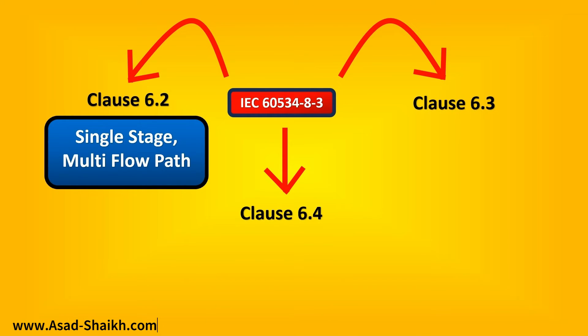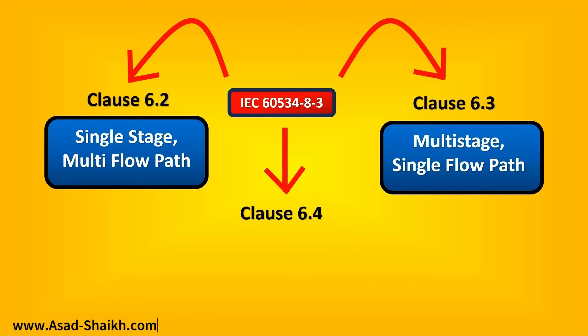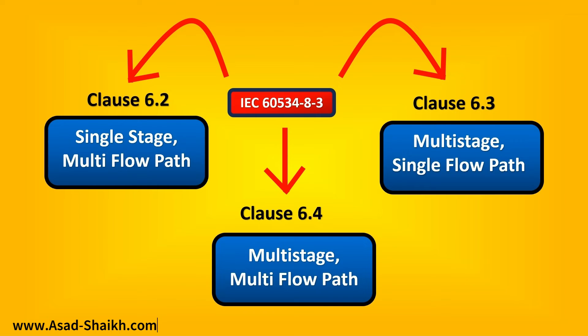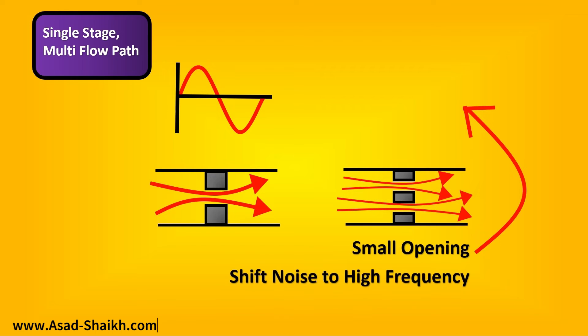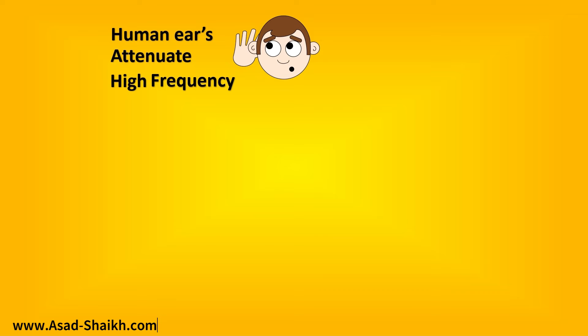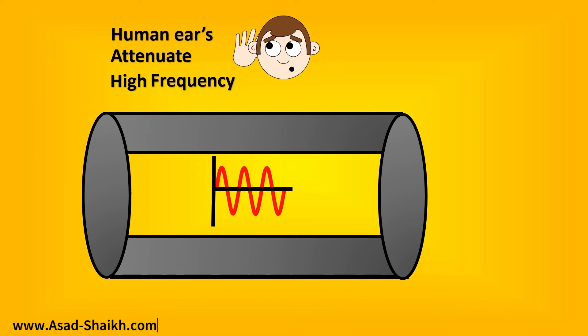Don't worry, we will look into all of these types in detail with an example. The single stage multi-flow path trim—what does it mean? Imagine here, let's take an example of a small opening and the flow is passing through it. There is noise generated. Now if I put multiple holes here, what is going to happen is because of the small opening, there is going to be a shift in the frequency, and it is going to shift to a higher frequency. We can use this principle to our advantage. This thing can be used because we know that the human ear can attenuate at high frequencies. Plus, if the high noise frequency is generated here, the other piping components when it comes out are at a lower frequency. So this will also attenuate the noise to a higher level.